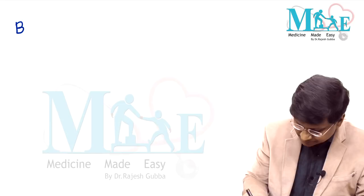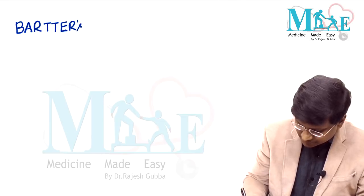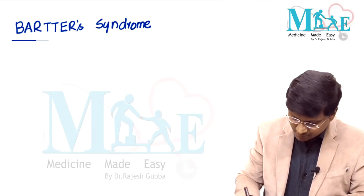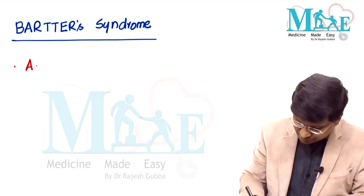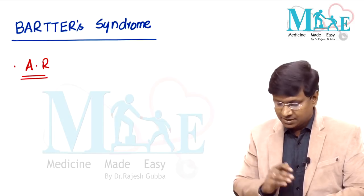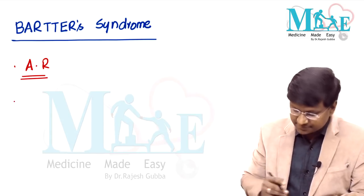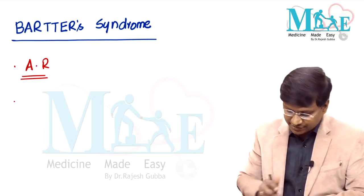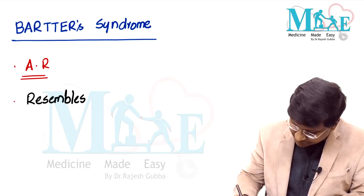Let me first discuss Bartter syndrome. This is one of the hereditary disorders, and its mode of inheritance is autosomal recessive. The features of Bartter syndrome resemble the features of loop diuretics.